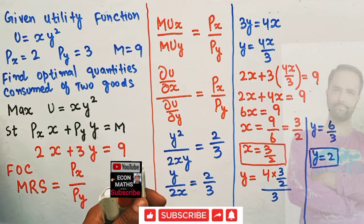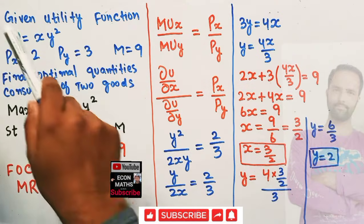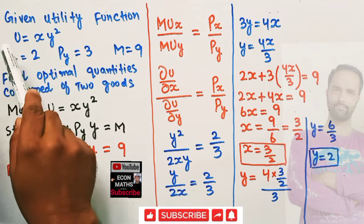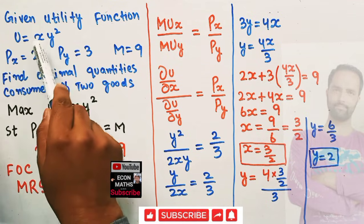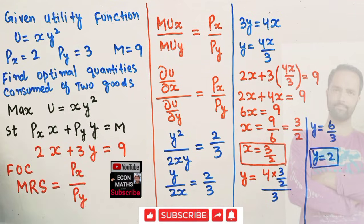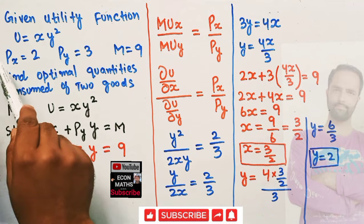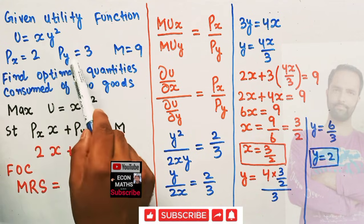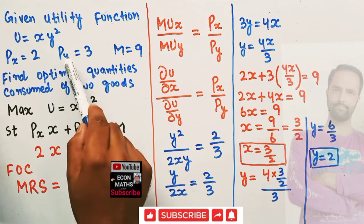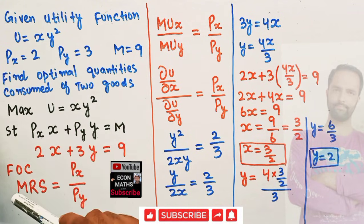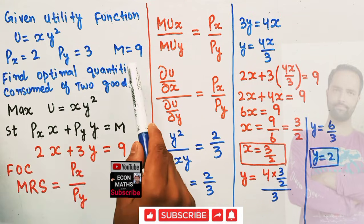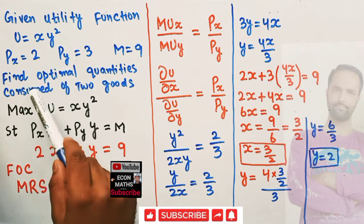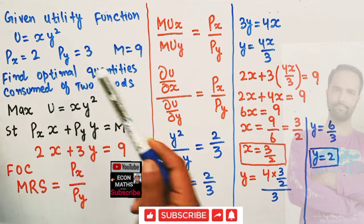In this video we will solve a problem on optimization. The question is: given utility function u = xy², where u denotes the utility and x and y are the two goods. Price of good x is 2 and price of good y is 3. Total income of the consumer is 9. We have to find out the optimal quantities consumed of the two goods.